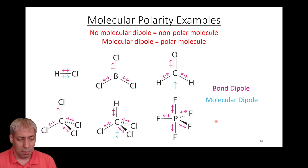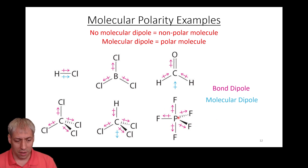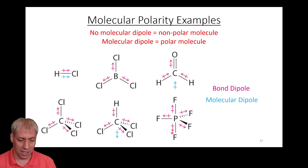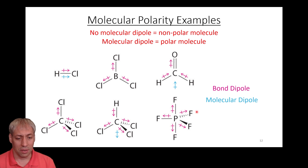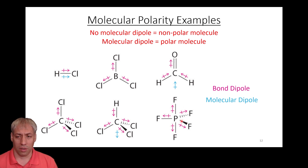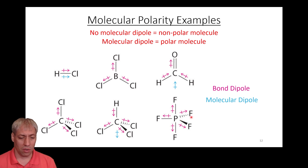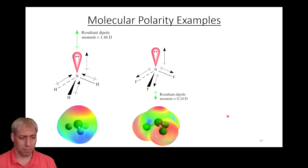Final example: PF₅ has five fluorines around a phosphorus. Each bond dipole adds up, but the three in-plane bonds cancel each other out and the two axial bonds up and down cancel each other. PF₅ is a non-polar molecule — it has polar bonds, but it's an overall non-polar molecule.